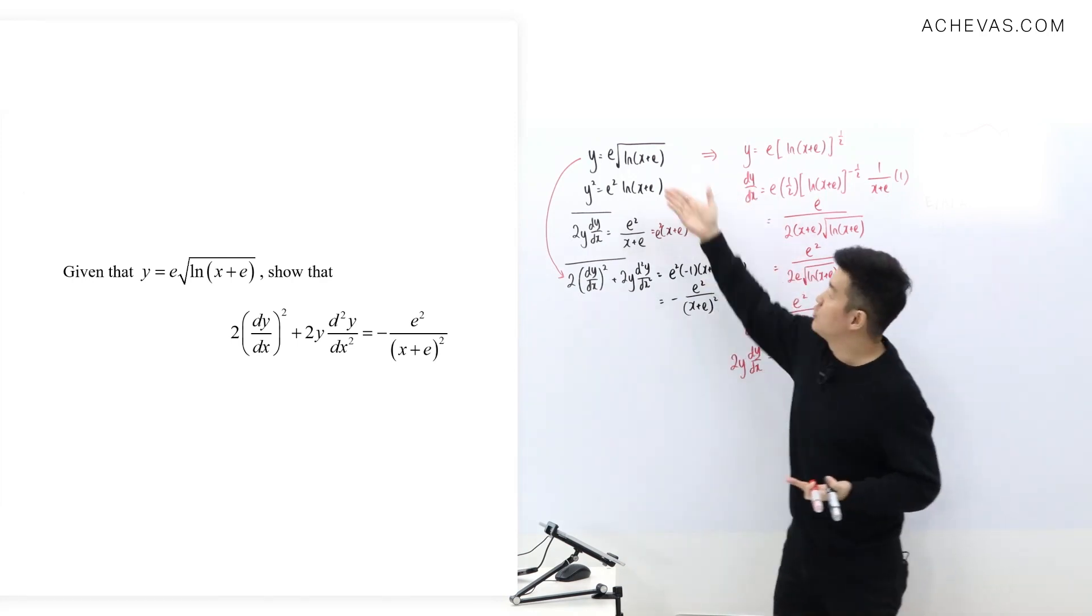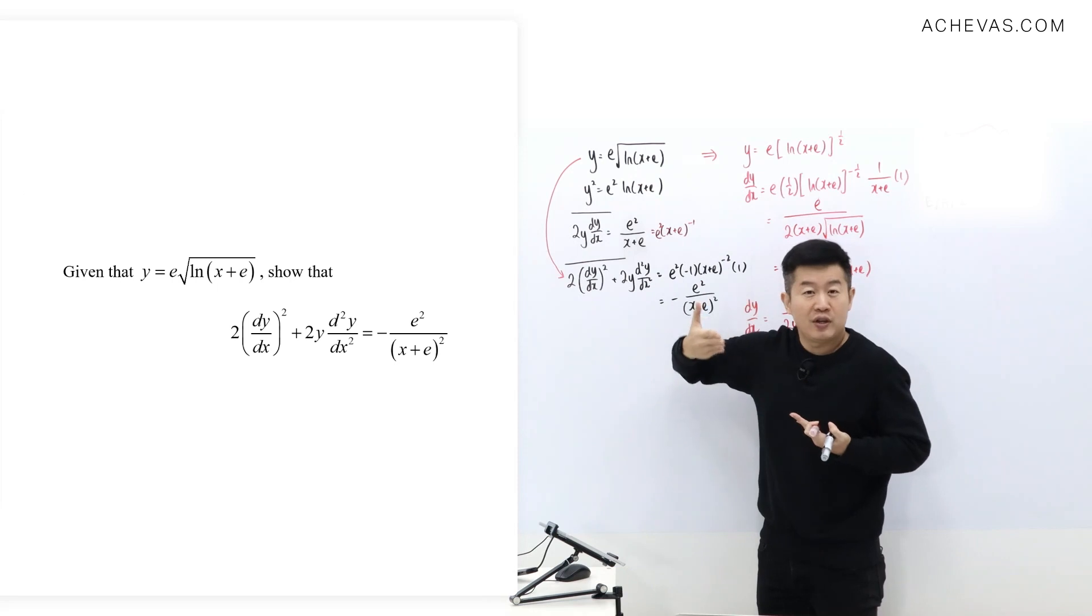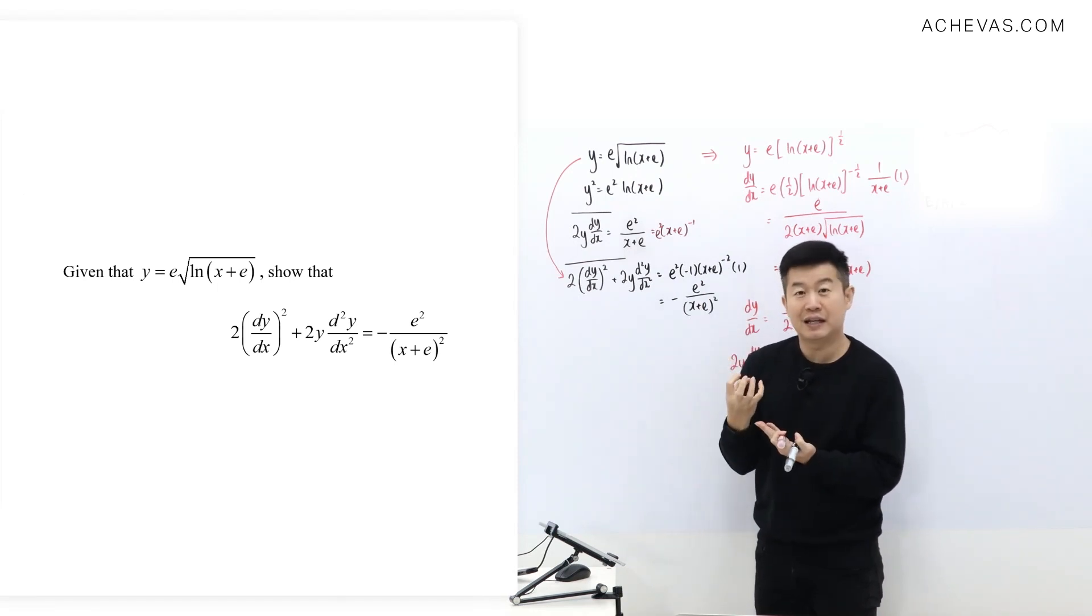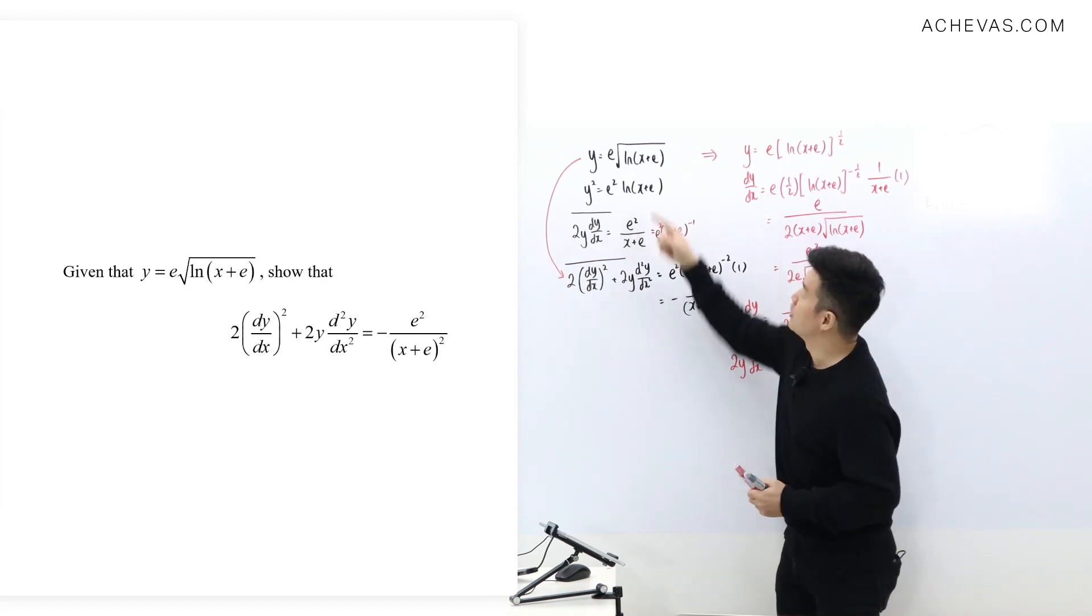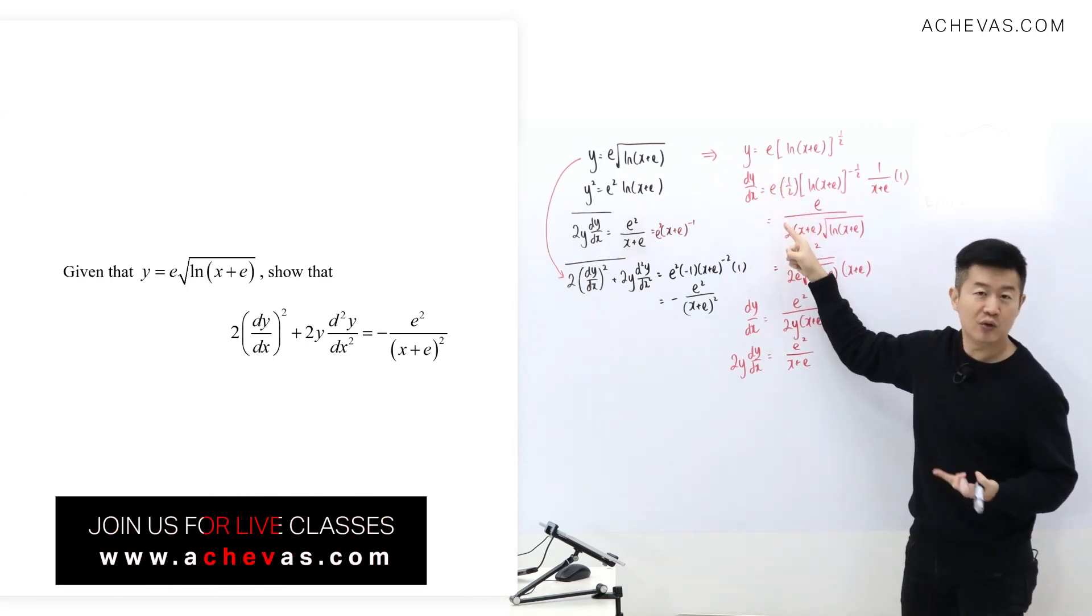So you know what that student will do? The student will take this because you only train yourself to do differentiation technique. You don't train yourself to think: on top of if I possess differentiation technique, how can I differentiate more efficiently? You don't think about this. So from here, what do you do? You will just differentiate.